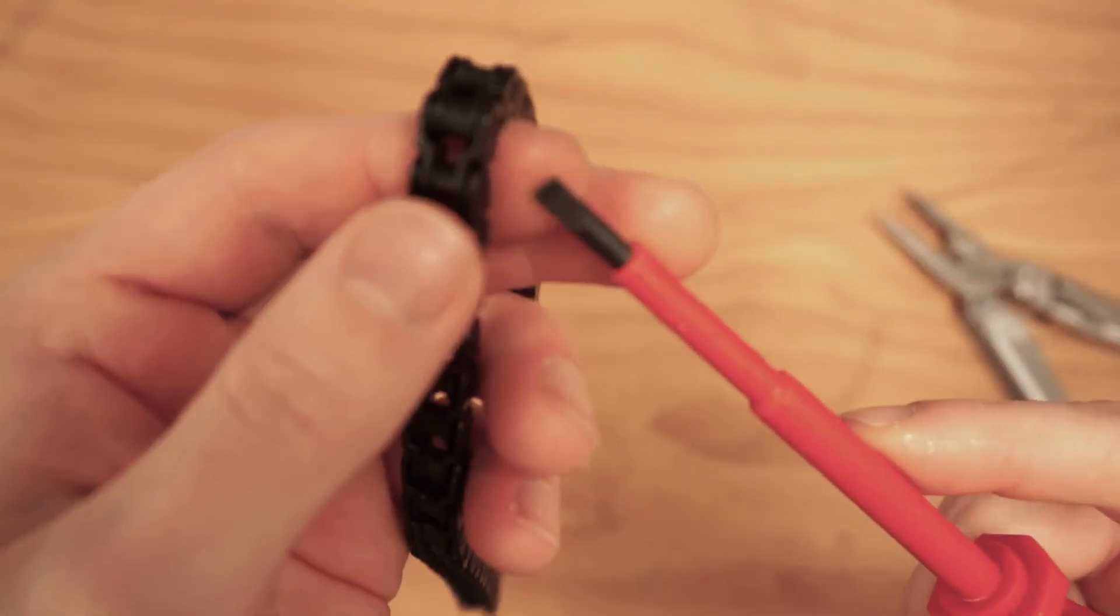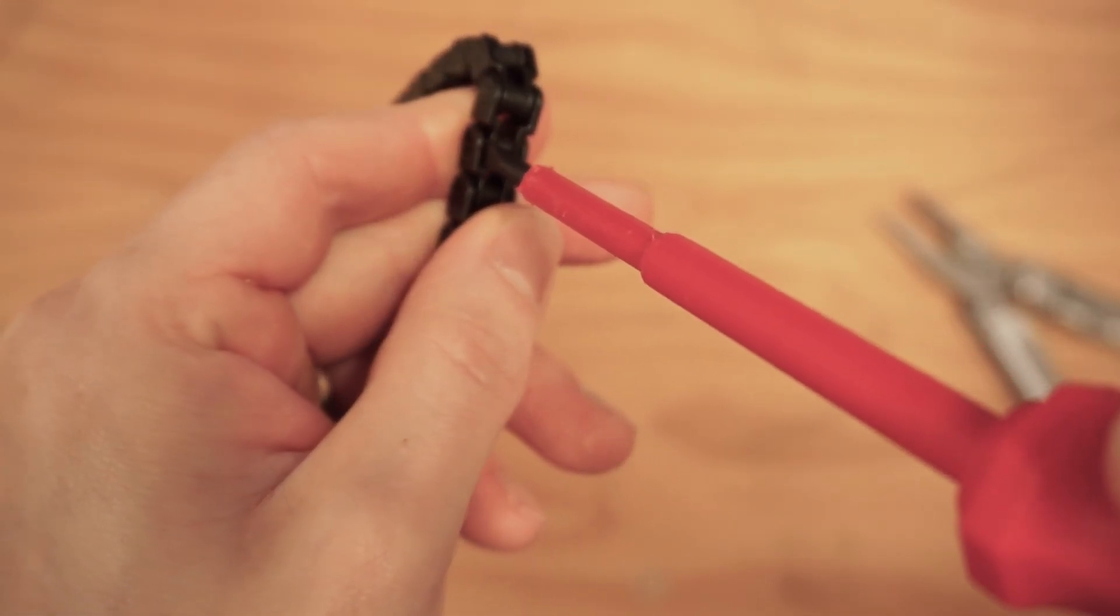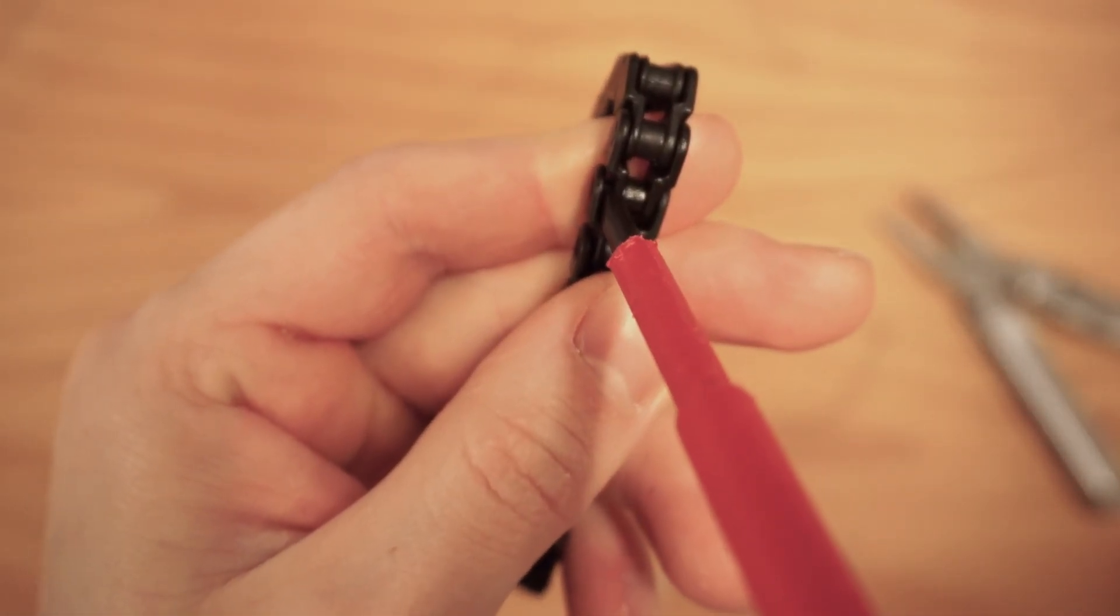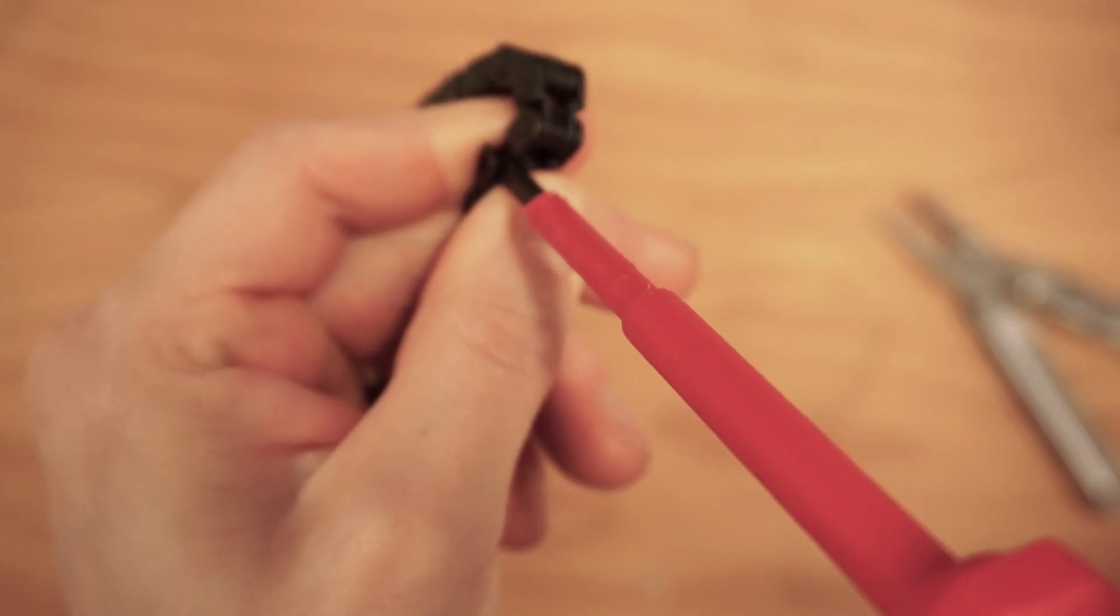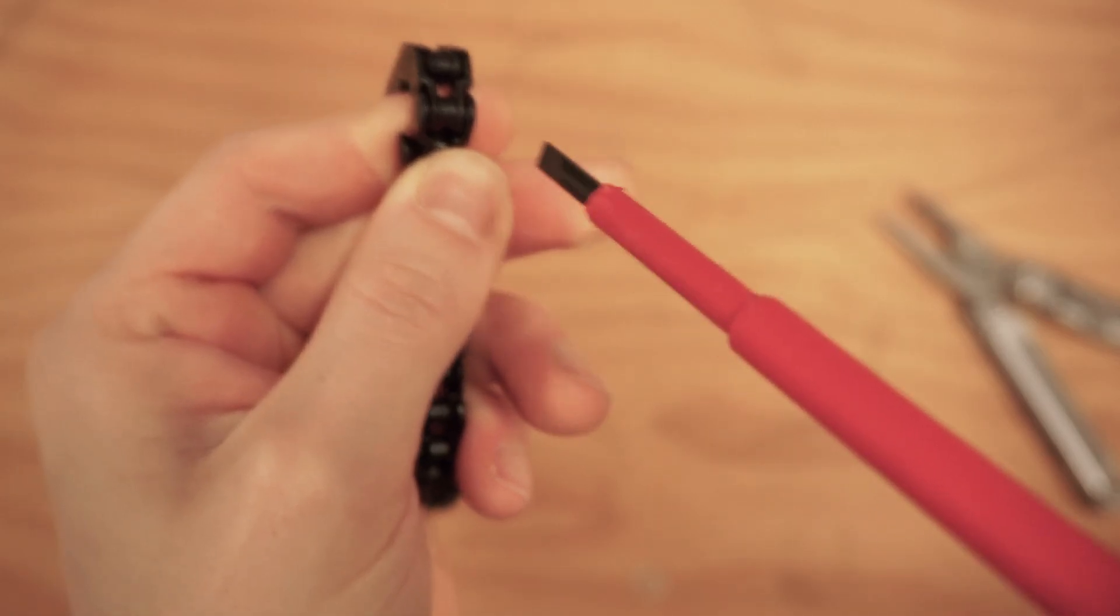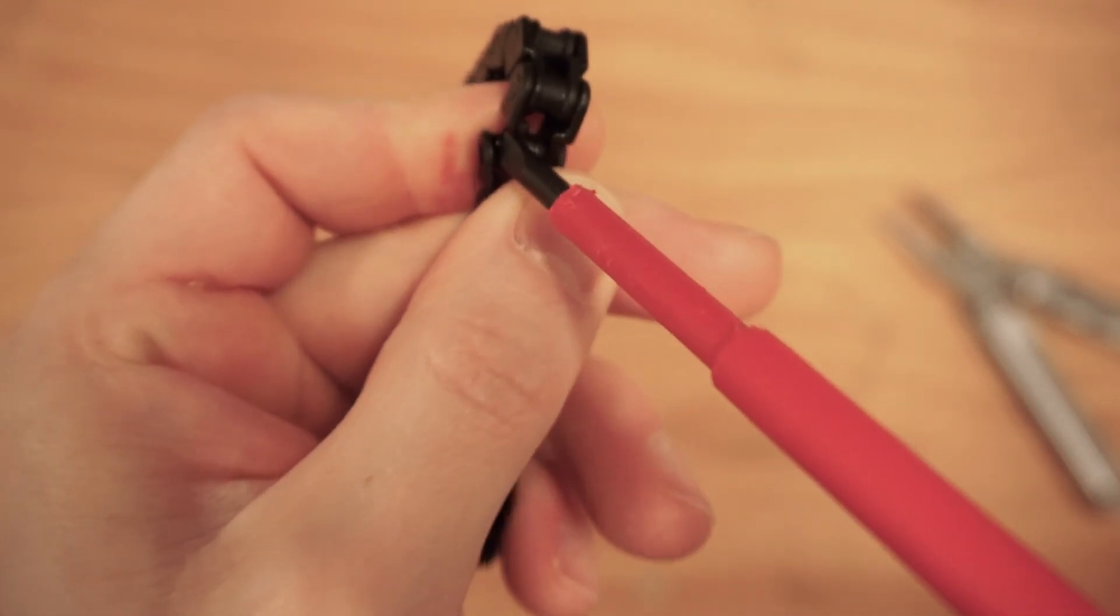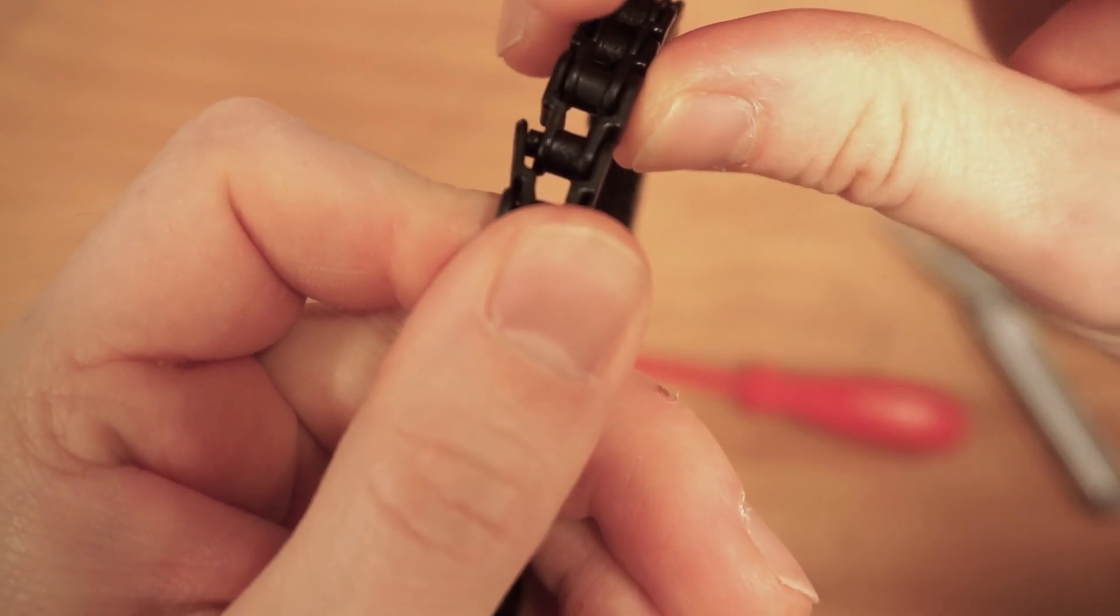In order to break one of these chains, what you can do is grab yourself a slot screwdriver, wedge it in between these two little points, push it in, give it a little bit of rocking back and forth while you're twisting the screwdriver left and right. And that should give you just enough space to be able to hook a chain up and off of one side.